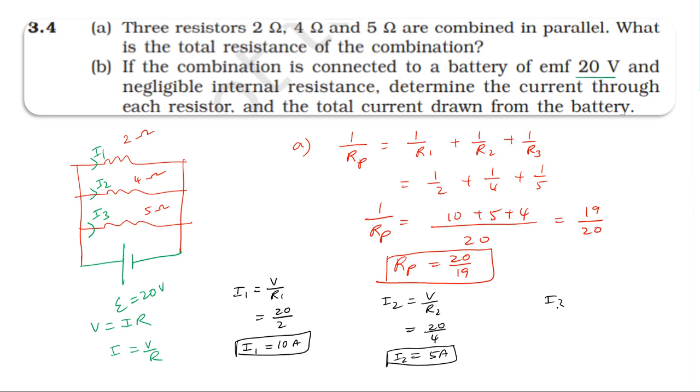For the third resistor, I3 equals V by R3. V is EMF of 20V, R3 is 5, so 20 divided by 5 equals 4. I3 is equal to 4A.